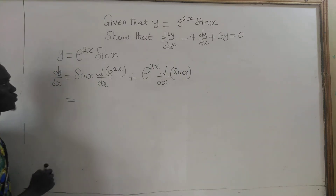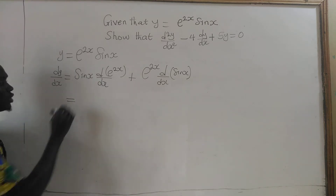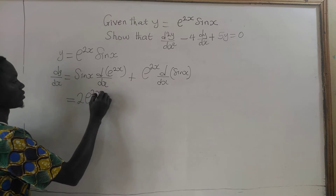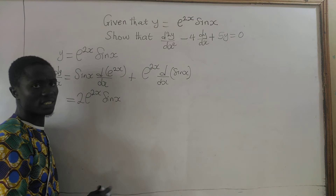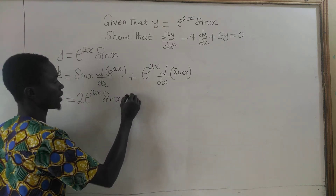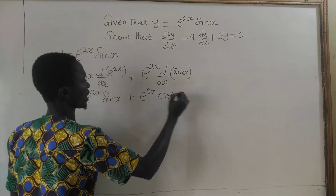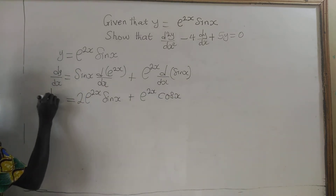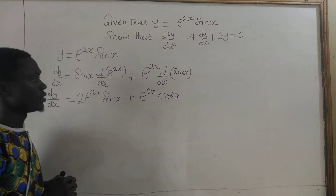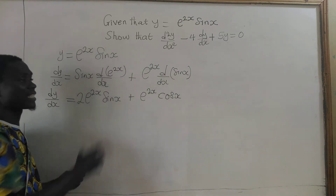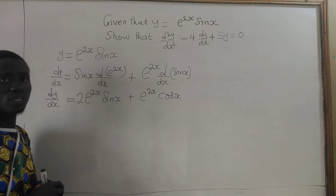This is equal to: differentiating e to the power 2x gives 2 times e to the power 2x, times sine of x, plus e to the power 2x times cosine of x as dy/dx. If you want to know more about how to differentiate exponential functions, check the description for that video — I have it covered in detail.